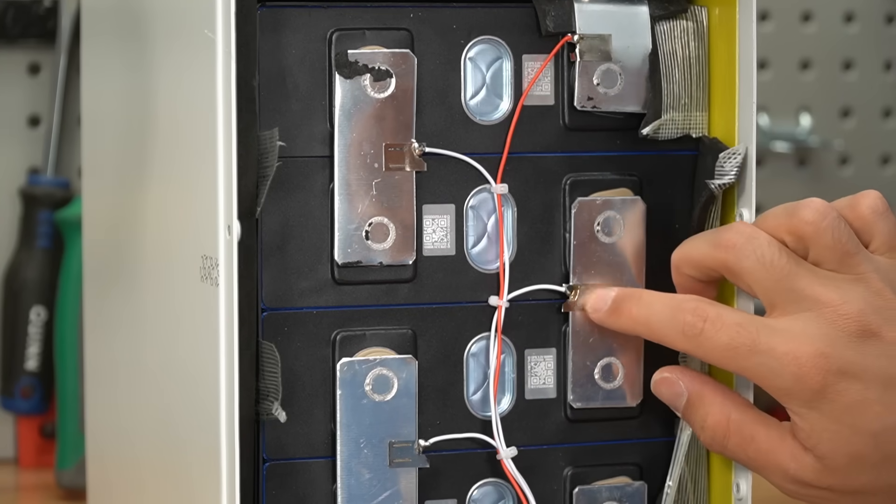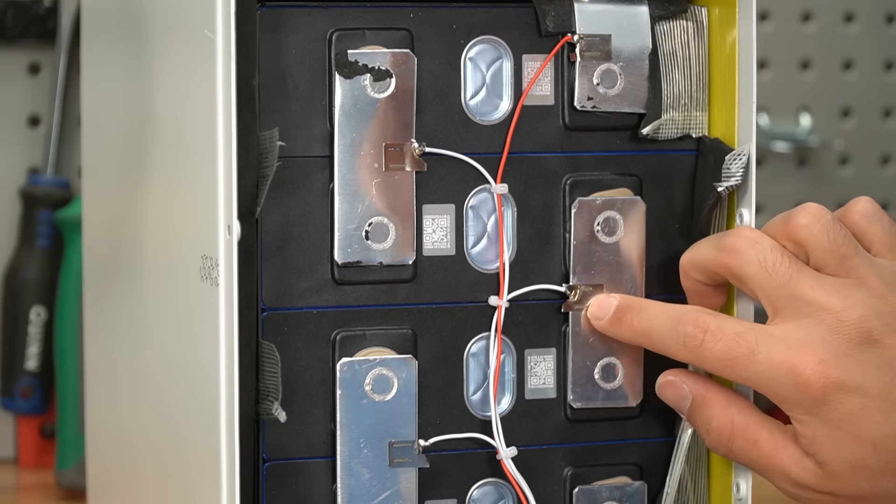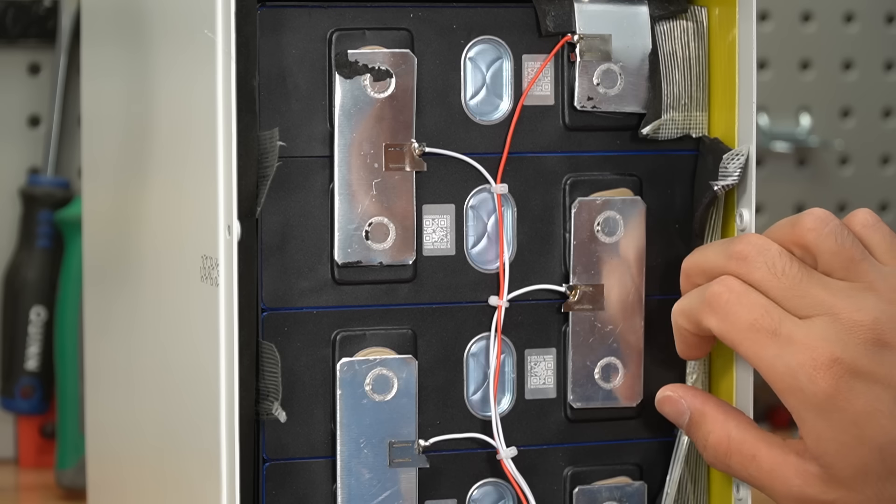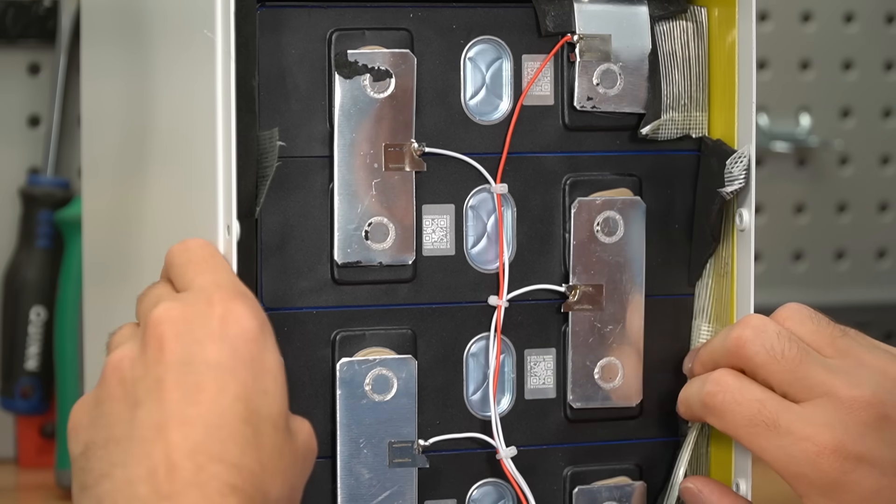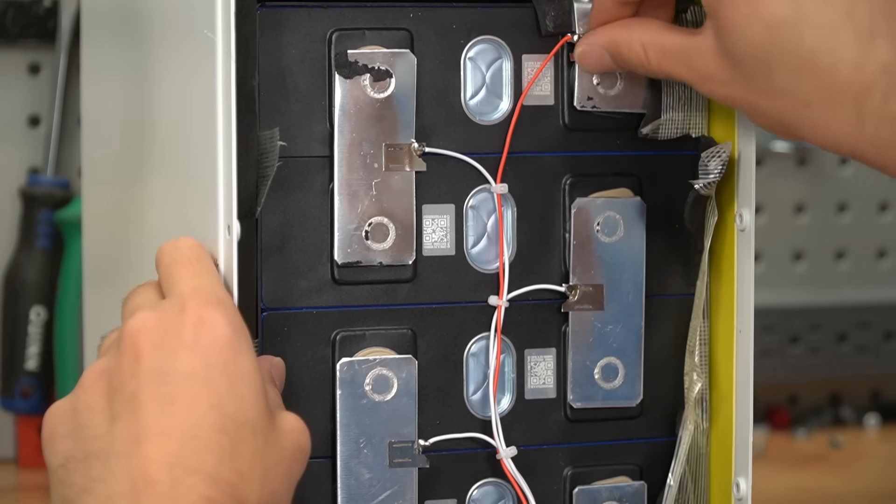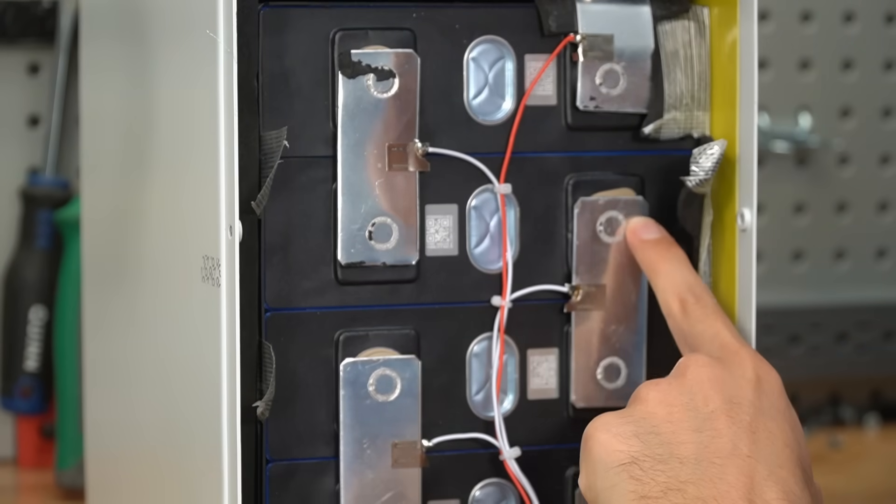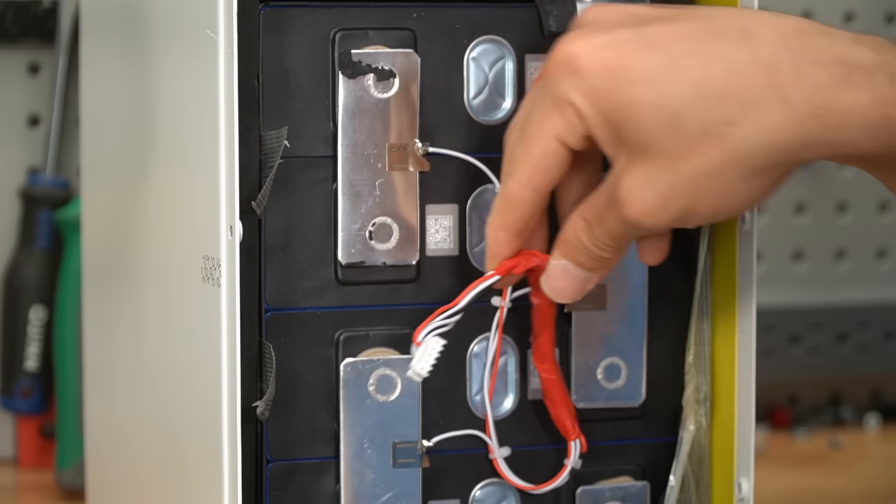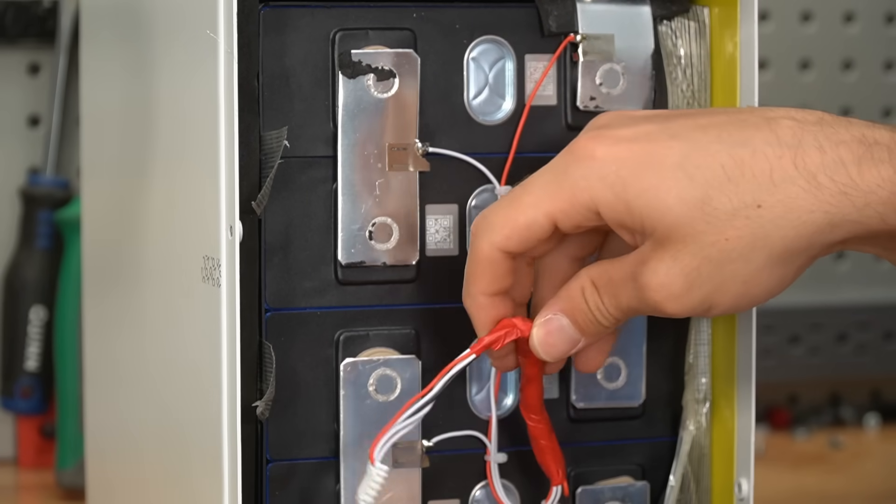But the balance wire connections are kind of weird. Look at this. They ultrasonically welded and then soldered to this little nickel strip, which is okay, I guess. It just looks pretty bad. But it is strong. I did wiggle all of them. But these are not serviceable like the SOK battery. You can't just swap out one of these cells. But this balance cable looks awful. We need to open this thing up.